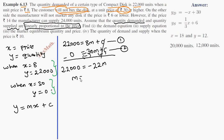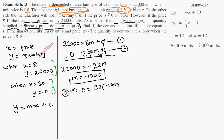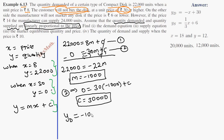So M = −1000. Now substituting back into the second equation: 0 = 30 × (−1000) + C, giving C = 30,000. So the demand equation is Yd = −1000x + 30,000.